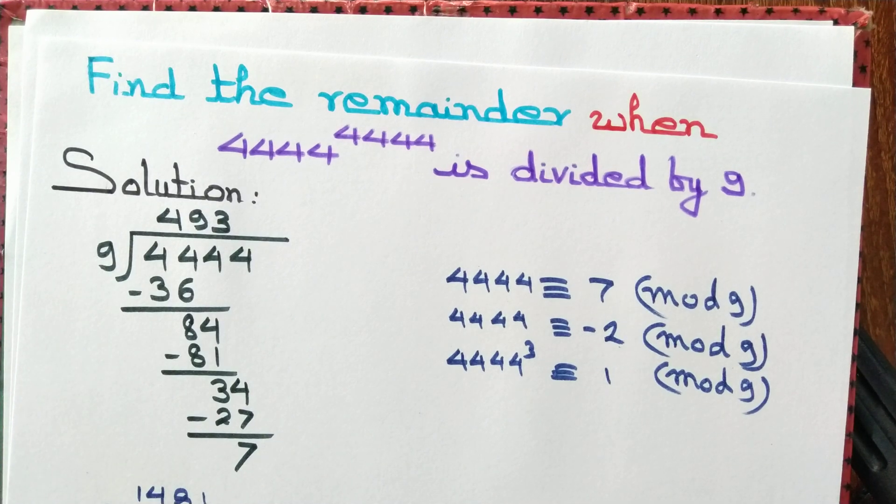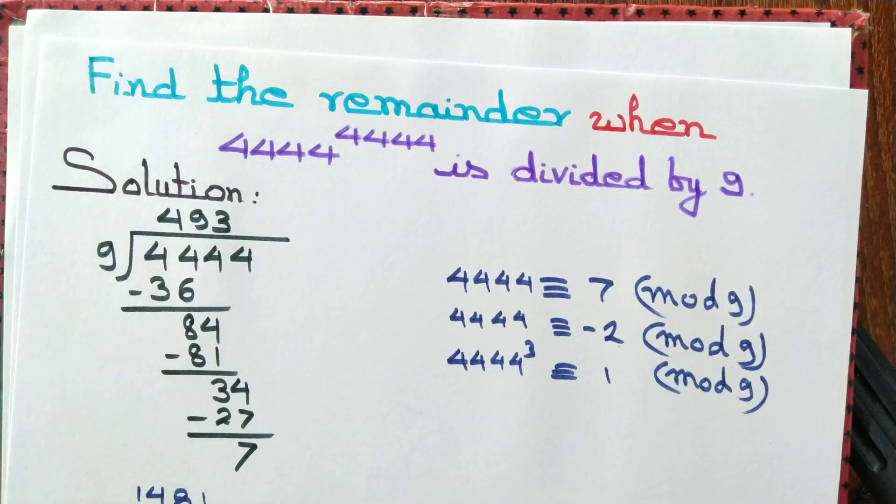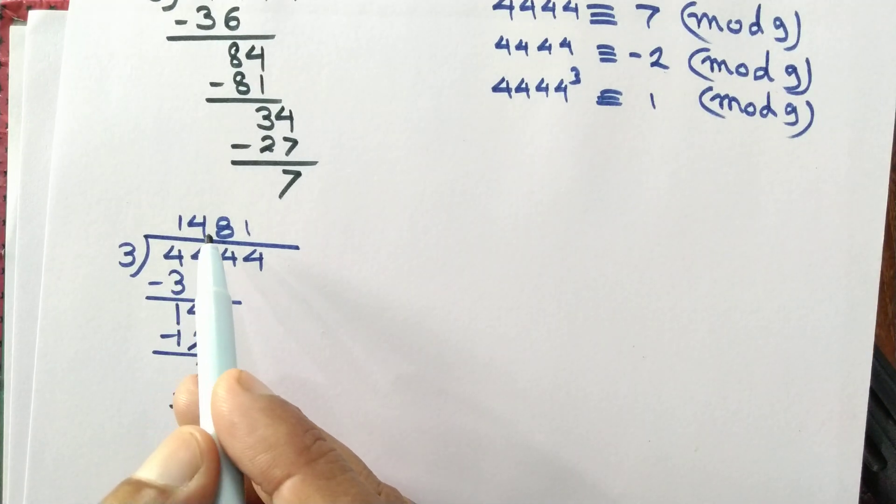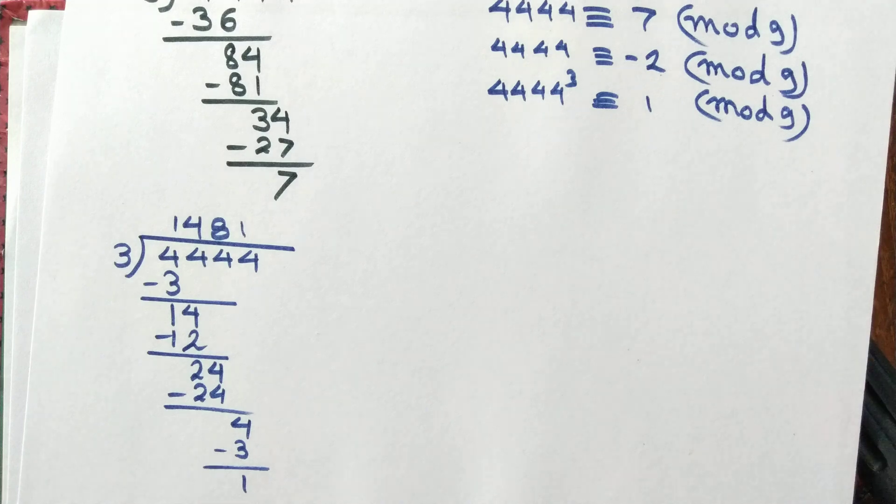But we want 4444 to the power 4444. So let's divide 4444 by 3 to get the quotient equal to 1481 and remainder equal to 1.